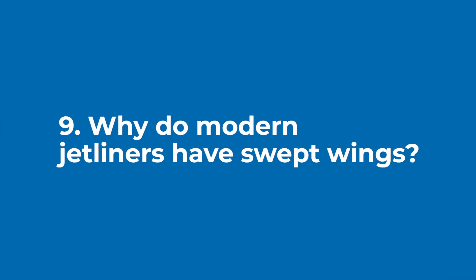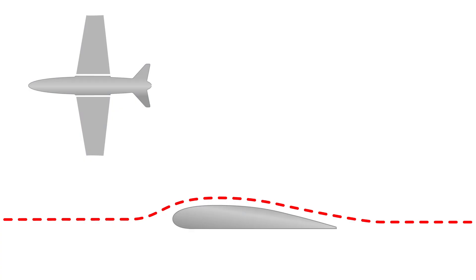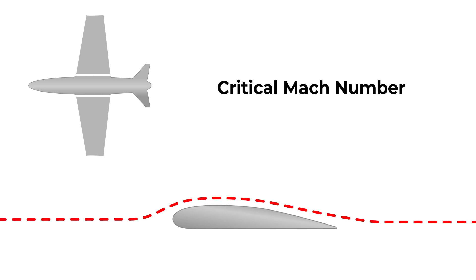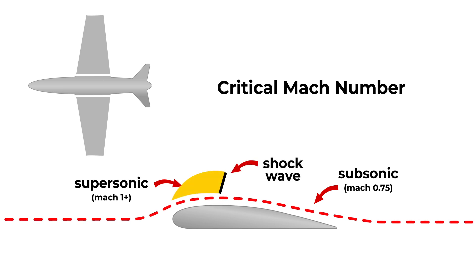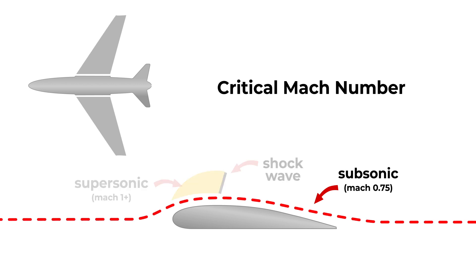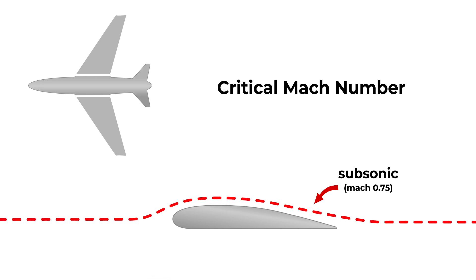Why do modern jetliners have swept wings? Modern jet planes have swept wings to compensate for the localized supersonic air speeds going over the wing, referred to as the critical Mach number. Meaning while you're riding along on your commercial flight at Mach 0.75, the air over the wing could be accelerating to Mach 1+, generating supersonic flow, causing shockwaves resulting in a massive increase in drag. But by sweeping the wing, we can delay the supersonic flow and raise the critical Mach number by tricking the wing into thinking it's flying slower than it really is, eliminating the shockwaves and the drag, allowing for greater control at higher speeds.